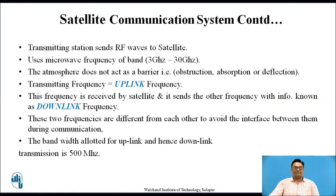The satellite system generally consists of a transmitting station which sends RF waves to the satellite. Microwave frequencies are used, which have a band of 3 GHz to 30 GHz. As this is long-distance communication, the atmosphere does not act as a barrier — it does not absorb or deflect the RF waves carrying information. The transmitting frequency is known as the uplink frequency, and the frequency received by the satellite which it retransmits is known as the downlink frequency.